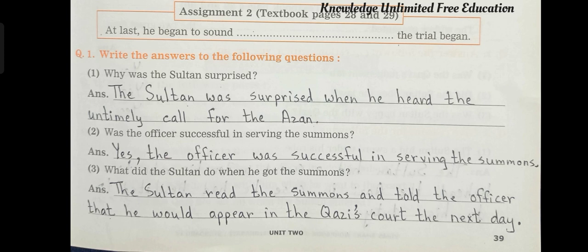Assignment number 2, Question number 1: Write the answers to the following questions. Number 1 — Why was the Sultan surprised? The Sultan was surprised when he heard the untimely call for the azzan. Number 2 — Was the officer successful in serving the summons? Yes, the officer was successful in serving the summons. Number 3 — What did the Sultan do when he got the summons? The Sultan read the summons and told the officer that he would appear in the Qazi's court the next day.